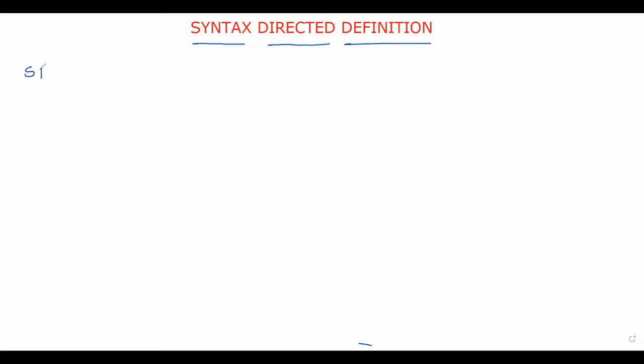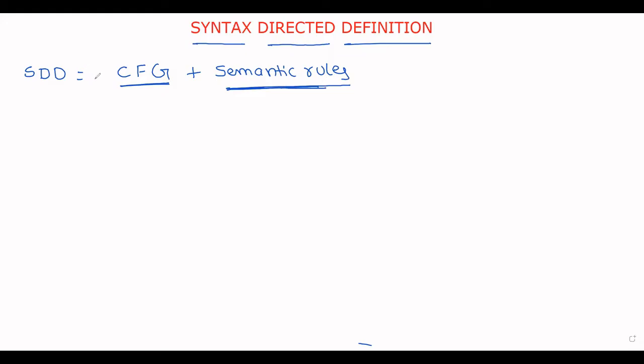Welcome to our channel. In this session we will discuss Syntax Directed Definition, in short represented as SDD. A Syntax Directed Definition is simply a combination of a context-free grammar with semantic rules. We already know what a context-free grammar is — it consists of a set of productions. For each and every production, if you are adding a semantic rule, then that grammar becomes the Syntax Directed Definition.